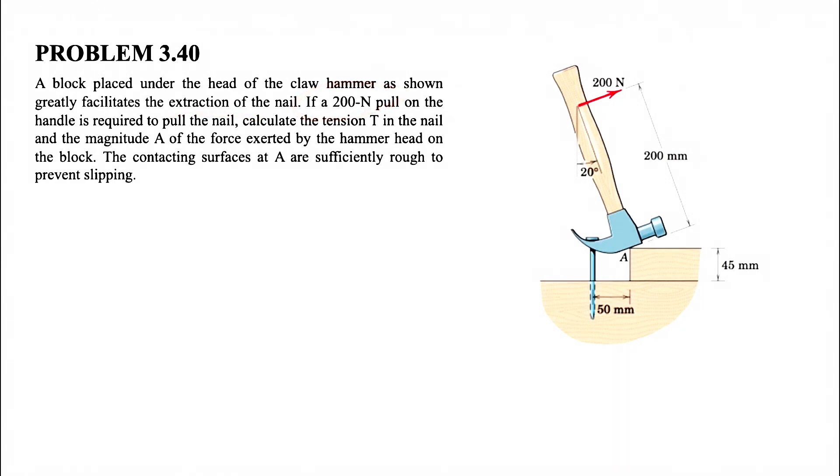We know a 200 Newton pull on the handle is required to pull the nail. So we're talking about this force. I'm going to calculate the tension in the nail and the magnitude of the force exerted on the hammer at point A. So all the reactions here and also the tension in the nail, and the contacting surfaces at A are sufficiently rough to prevent slipping.